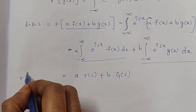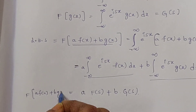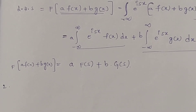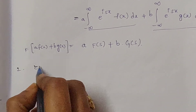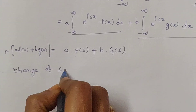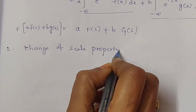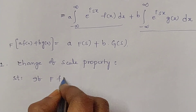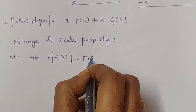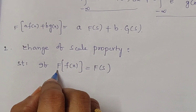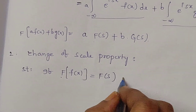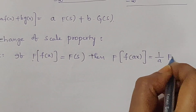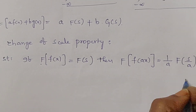This equals a times capital F of s plus b times capital G of s. This is the linear property. The second property is the change of scale property. Its statement is: if the Fourier transform of f of x equals capital F of s, then the Fourier transform of f of ax equals 1 over a times capital F of s over a, where a is greater than 0.